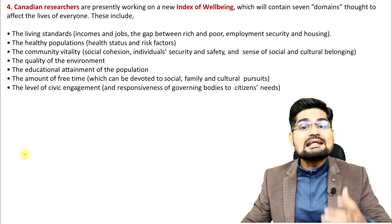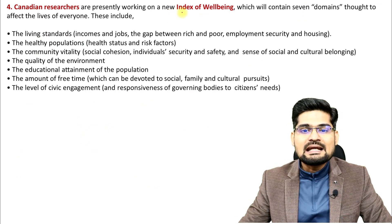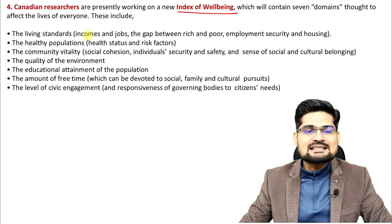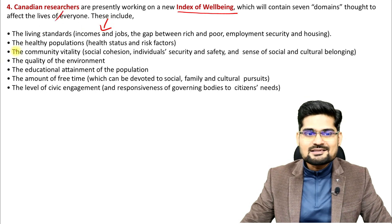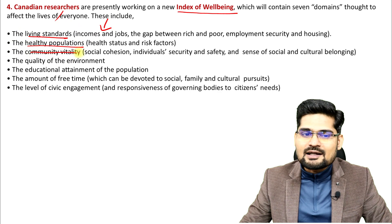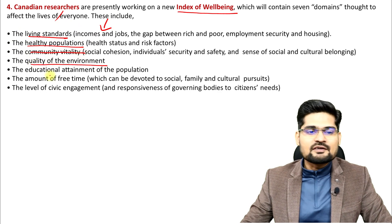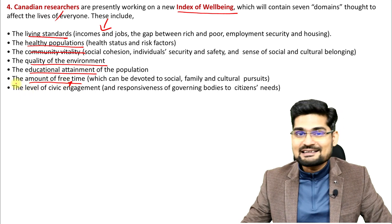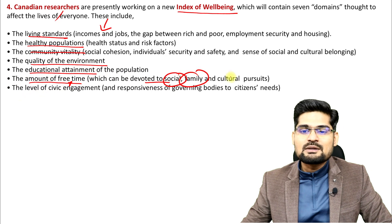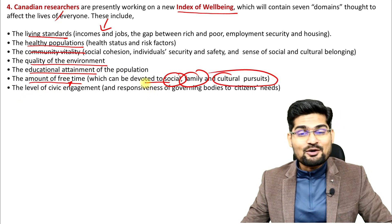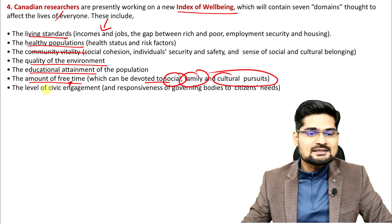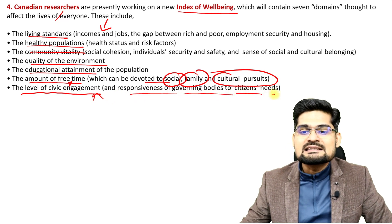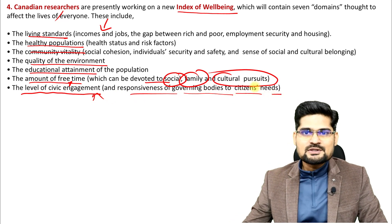Canadian researchers developed an Index of Well-being using seven domains: living standards, healthy population, community vitality, quality of environment, educational attainment, amount of free time that can be devoted to social, family, and cultural pursuits — which is a particularly interesting addition — and level of civic engagement and responsiveness of governing bodies to citizens' needs.